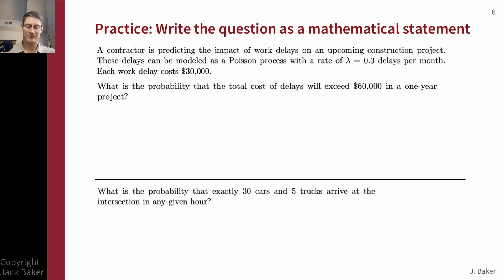Now let's try to write questions as mathematical statements with a little more information. This will require us to also do step one — specifying some random events or random variables — in order to write a mathematical statement. Here's a problem about a Poisson process and the cost of work delays. In terms of writing down the question, we don't need to worry yet about the Poisson process details. As soon as I see 'what is the probability,' I know I have a question.